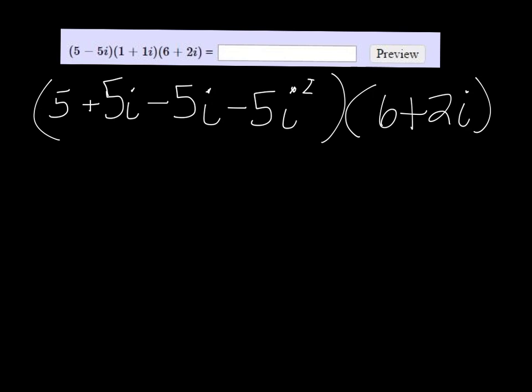Let's clean up what we just did here before we move on. The plus 5i and the minus 5i are gone. i squared is negative 1, so that changes it to a plus 5, and 5 plus 5 is just 10.